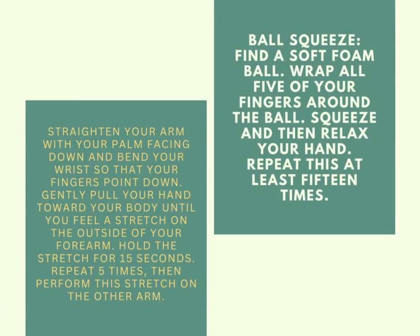Straighten your arm with your palm facing down and bend your wrist so that your fingers point down. Gently pull your hand toward your body until you feel a stretch on the outside of your forearm. Hold the stretch for 15 seconds, repeat five times, then perform the stretch on the other arm.